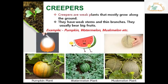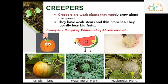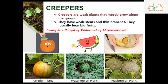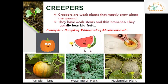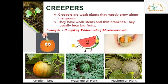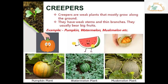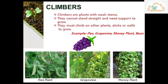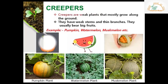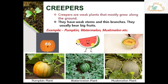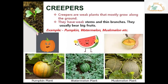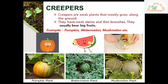Creepers are weak plants that mostly grow along the ground. They have weak stems and thin branches, and they usually bear big fruits. Examples include pumpkin, watermelon, and muskmelon.